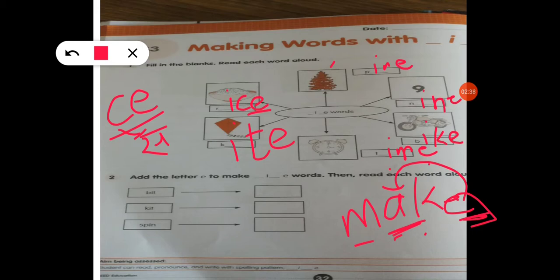There is a question to add the letter E to make IE words. Then read the words aloud. Now here there is 'bit.' When we add E letter in the end of bit, it gives the sound 'bite.' It was bit, now what happened? Bite. The answer is bite because there is in the end an E letter.